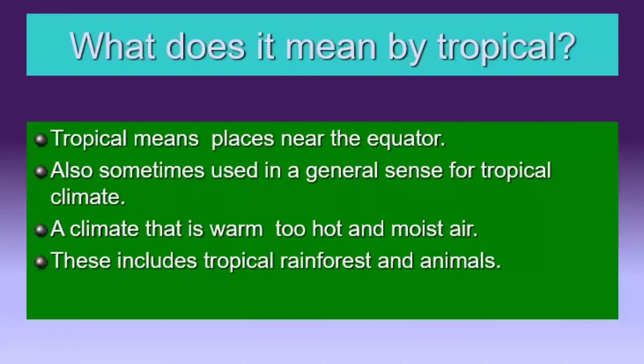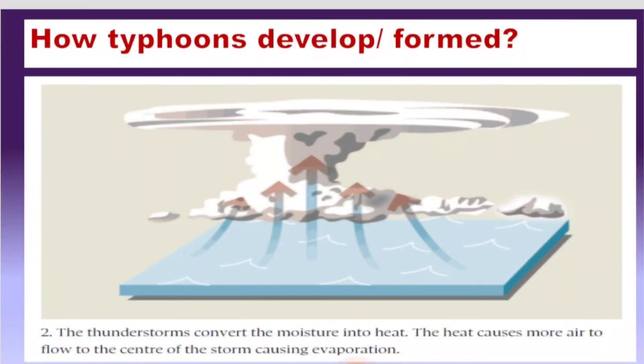The word 'tropical' specifically refers to places near the equator — areas with a warm to hot and moist climate year-round, including tropical rainforests. The Philippines is near the equator, which is why we have a tropical climate. In the next step, thunderstorms convert moisture into heat, and that heat causes more air to flow toward the center of the storm, causing evaporation.